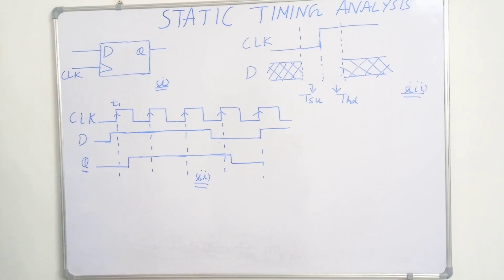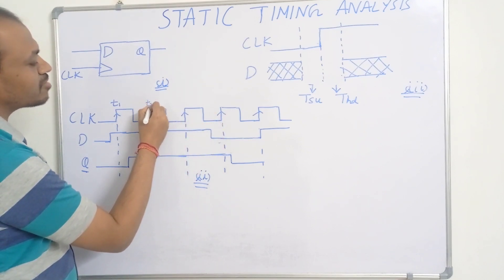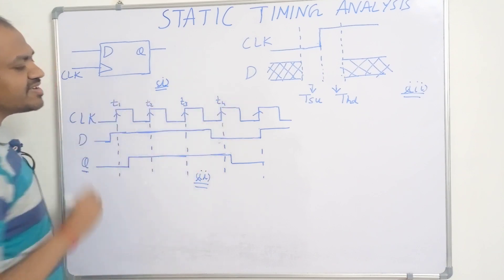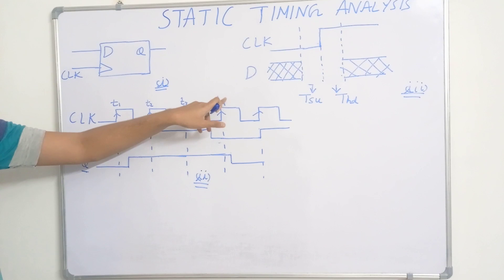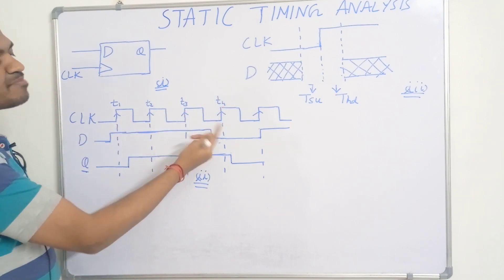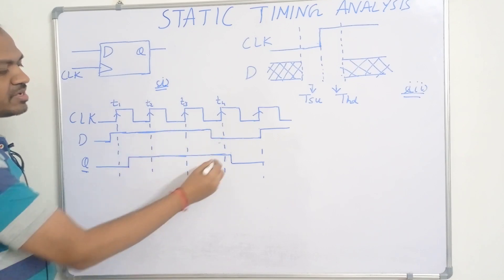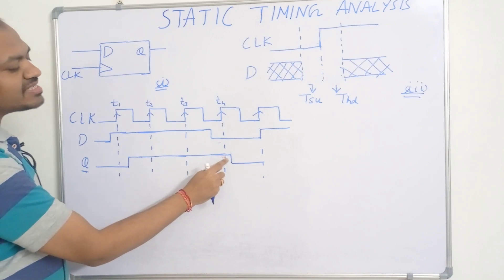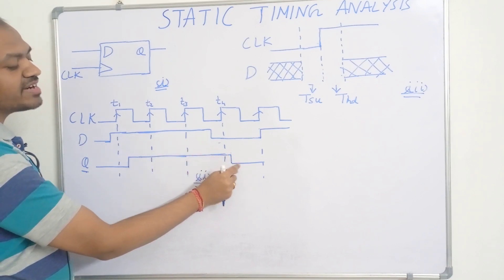This continues. Then just before the arrival of this clock pulse, let us name this as T3 and this as T4. Just before the arrival of the clock pulse at time T4, this D input changed from 1 to 0. So after the arrival of clock pulse at time T4, this Q changed from 1 to 0. This is a normal operation.